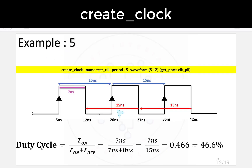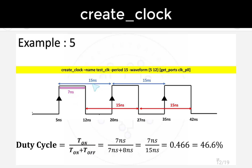Example 5: Rising edge at 5 ns, falling edge at 12 ns, time period = 15 ns. The constraint is: create_clock -name test_clock -period 15 -waveform {5 12} [get_ports clock_PLL]. Duty cycle = 7/15 = 0.466 = 46.6%.